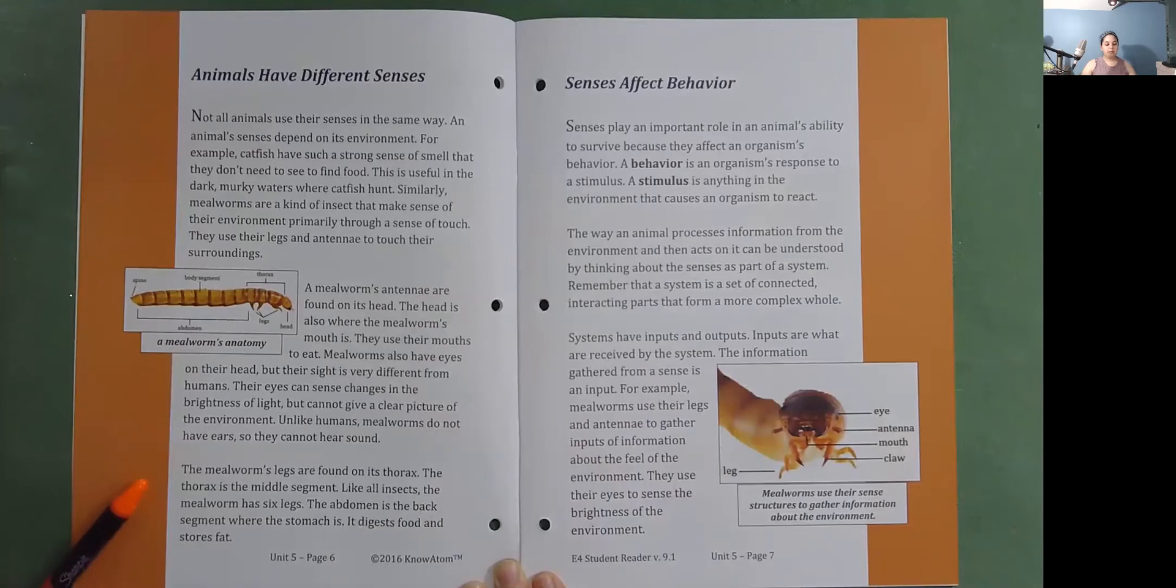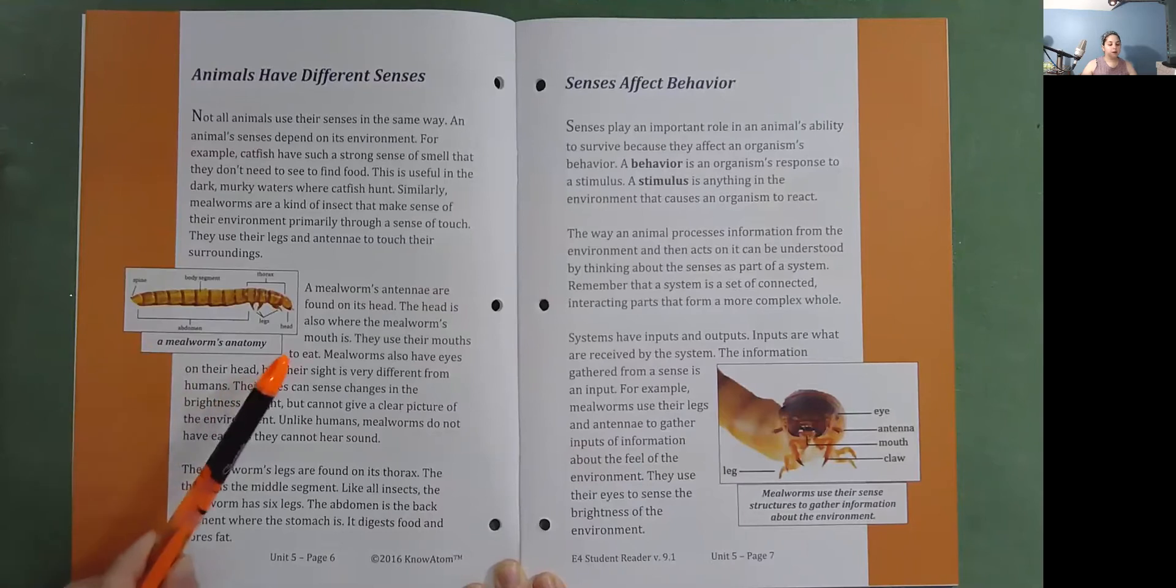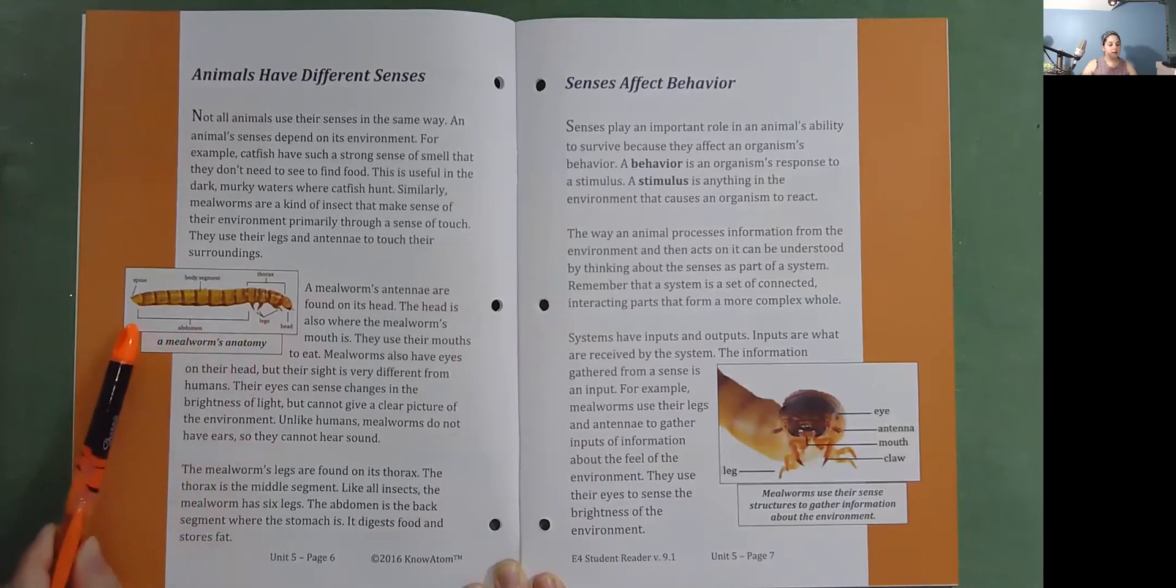The mealworm's legs are found on its thorax. The thorax is the middle segment. Like all insects, the mealworm has six legs. The abdomen is the back segment where the stomach is. It digests food and stores fat. A mealworm's anatomy: head, thorax and legs where the legs are, an abdomen, body segment, and spine.